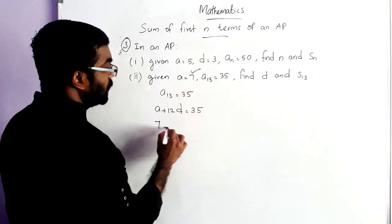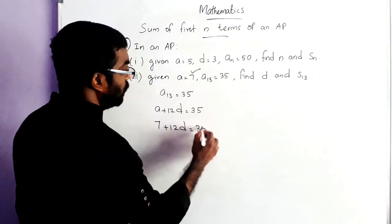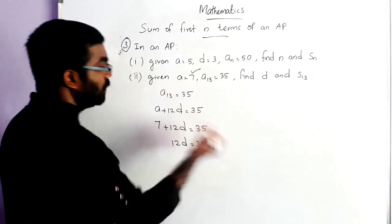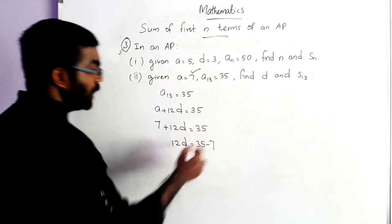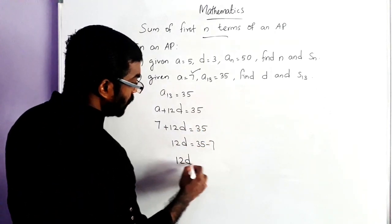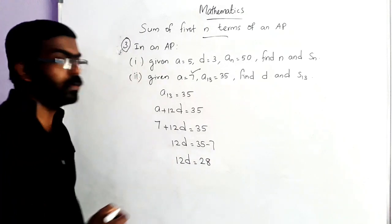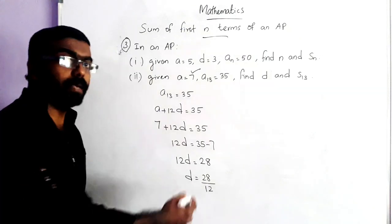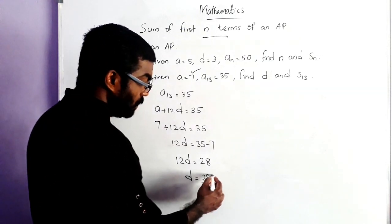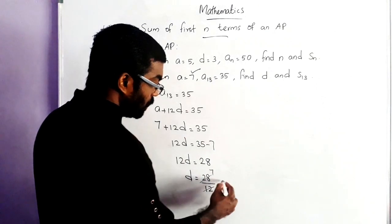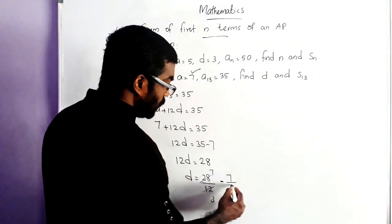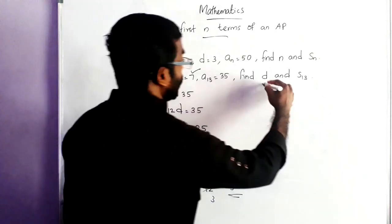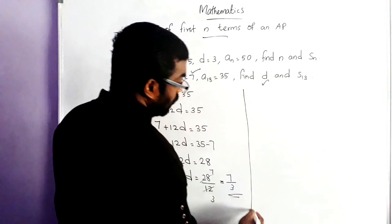We replace the value of A. 7 plus 12D is equal to 35. Or 12D is equal to 35 minus 7. Taking plus 7 to the right side it becomes minus 7. So 12D is equal to 28. D is equal to 28 divided by 12. Here we cancel: 4 goes into 28 giving 7, and into 12 giving 3. So D is equal to 7 by 3.